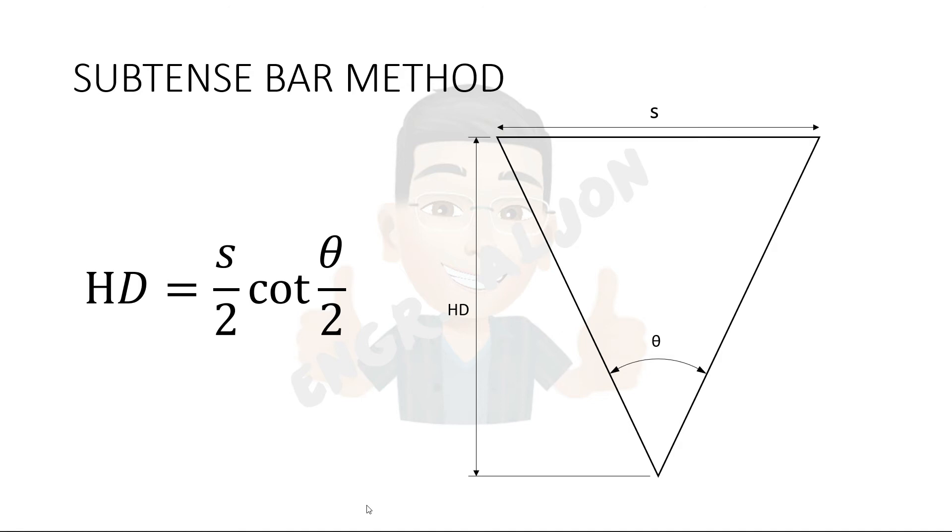This is derived using trigonometric functions. If you want to know the derivation, you can leave a comment below. For me, this formula just makes the topic complicated. I don't know about you guys, but I get scared when I see a formula with a cotangent in it. I use the traditional way of solving that uses the basic trigonometric functions since this is just an isosceles triangle.